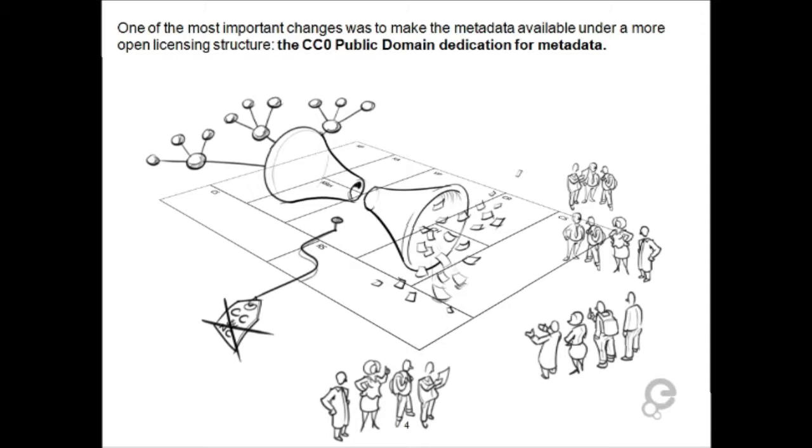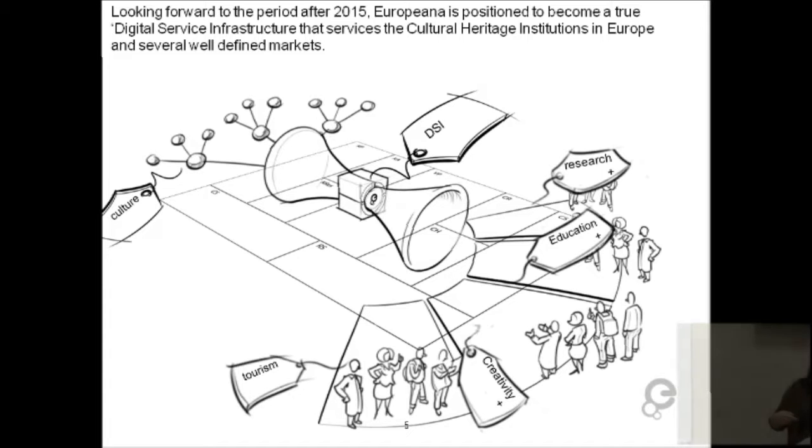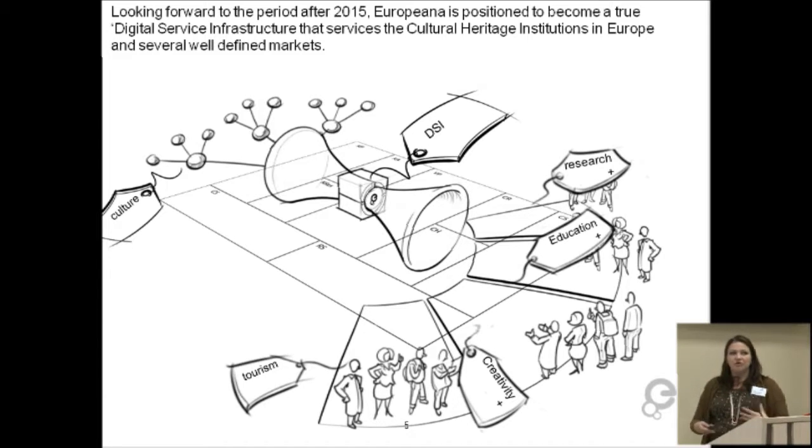So when we start looking forward to 2015, which is the next step in our corporate strategy, we're looking at providing a digital infrastructure service. The European Commission calls it a core service platform. And so what we have to do is try and think about, well, what does that look like? Does that mean that Europeana just puts itself into the cloud and becomes a platform? Well, that sounds nice in general, but there's obviously a lot more to it than that.